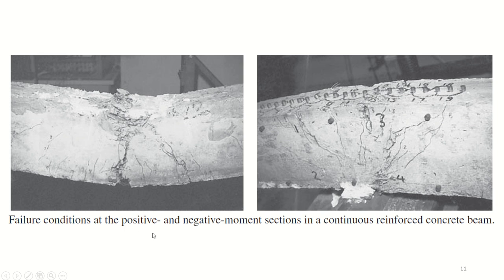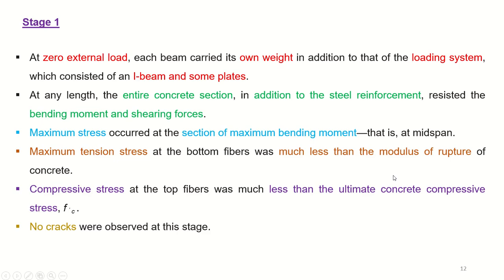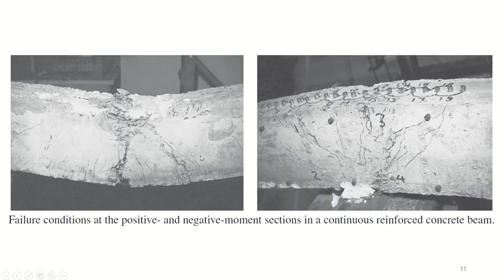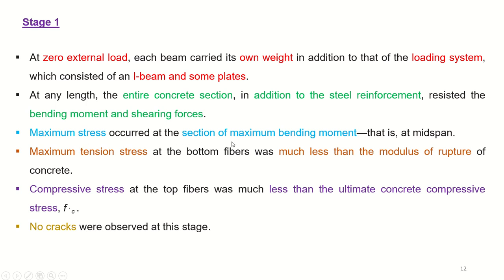The failure conditions show that for positive bending, cracking occurs at the bottom and crushing at the top; for negative bending, cracking is at the top and crushing at the bottom. In Stage 1, with no external load applied — only the self-weight of the beam and assembly — no cracking occurs. Maximum stress appears at the mid-span section; tensile stress at the bottom was much less than the modulus of rupture, and compressive stress at the top was much less than the ultimate compressive stress.